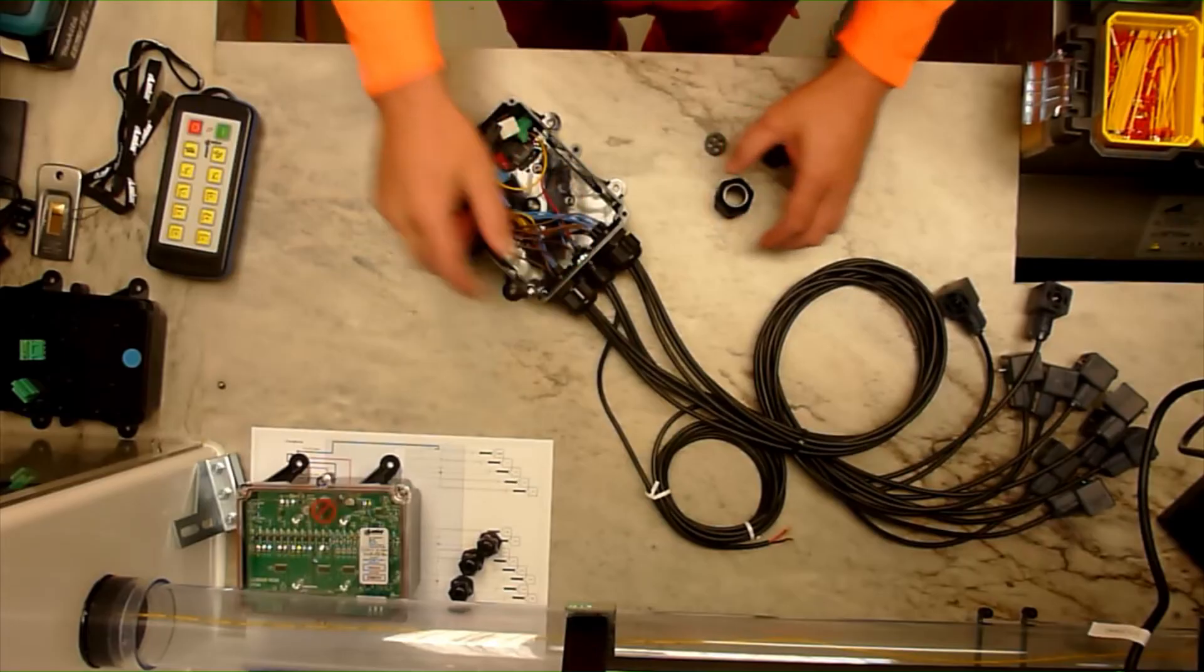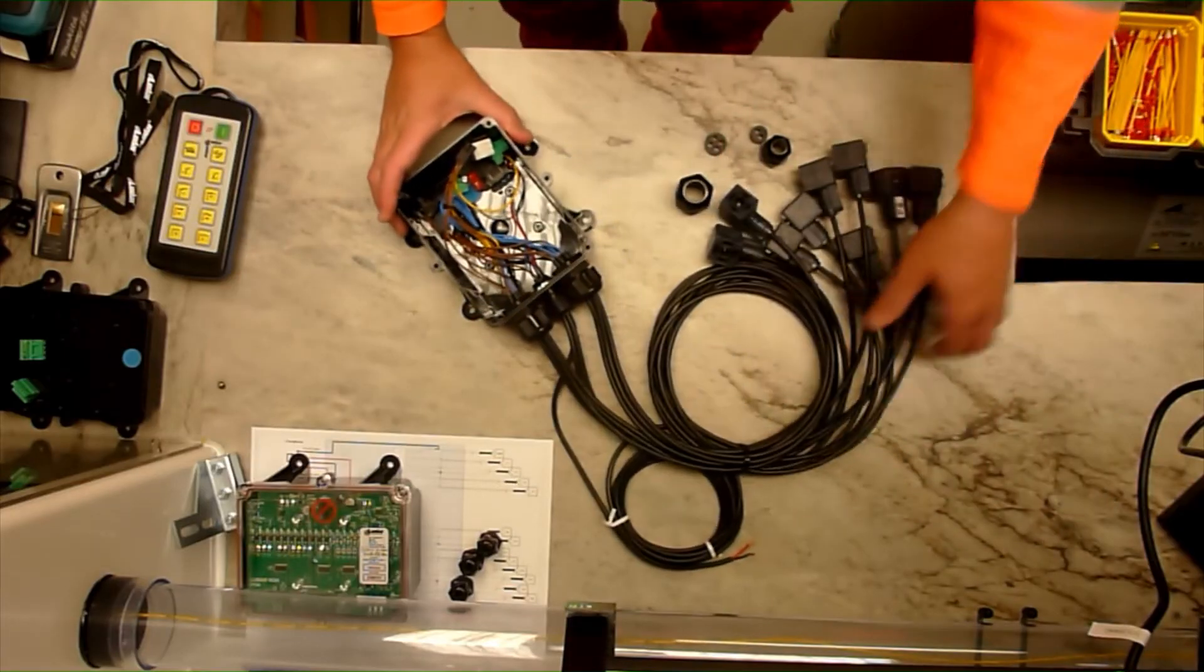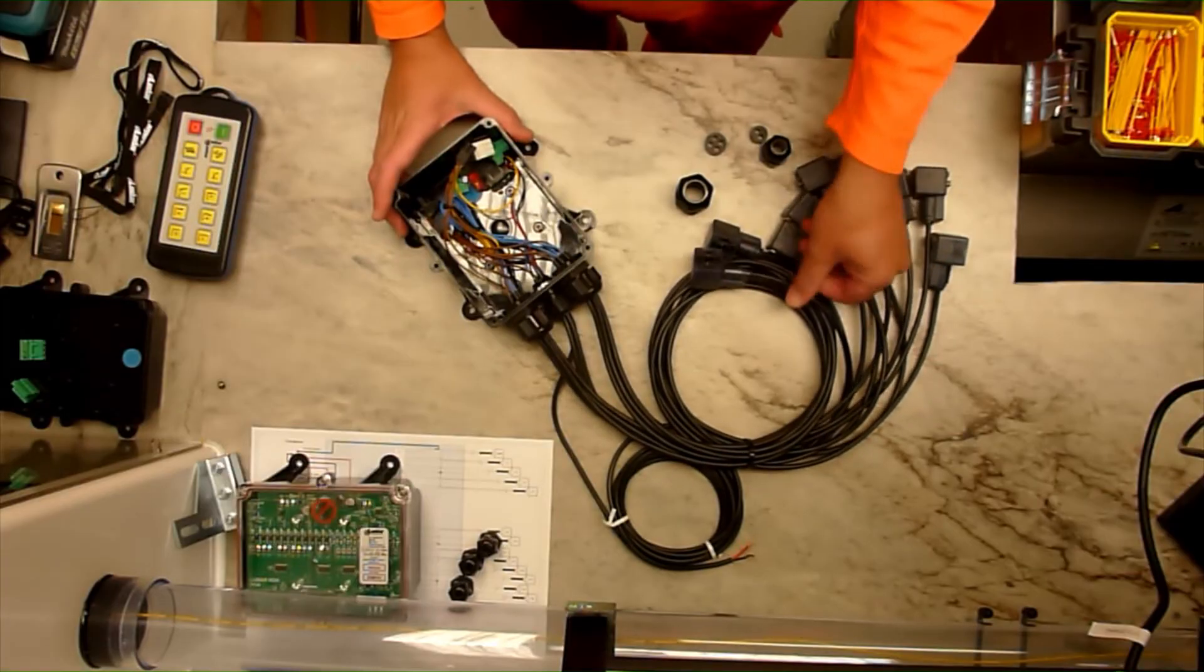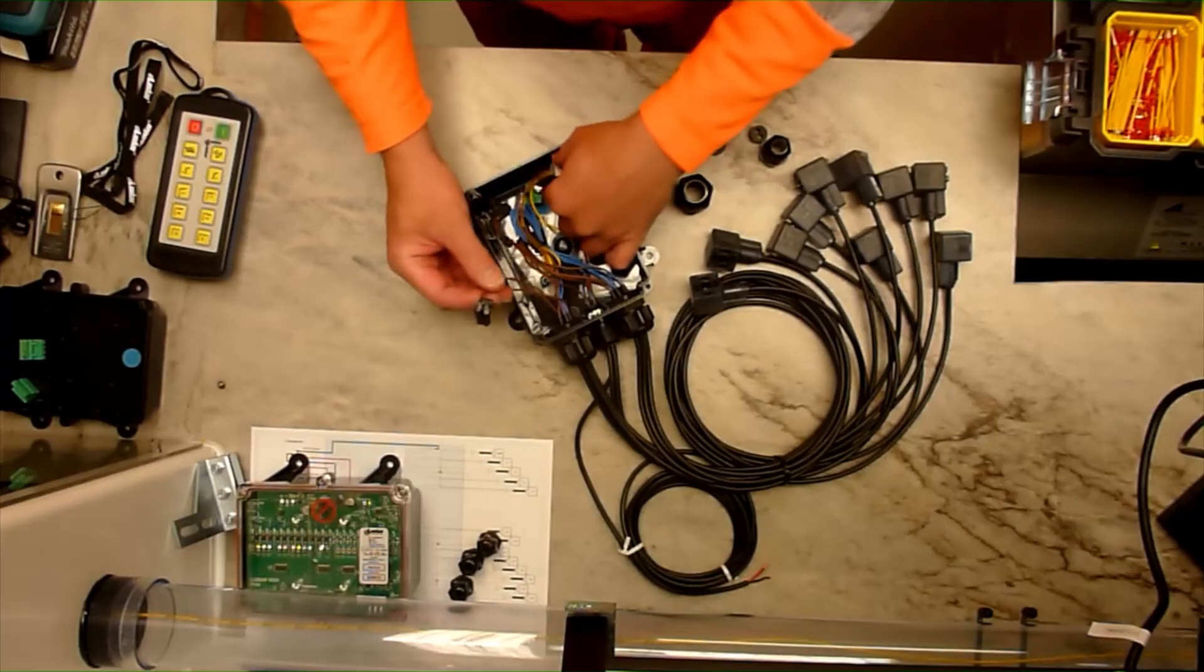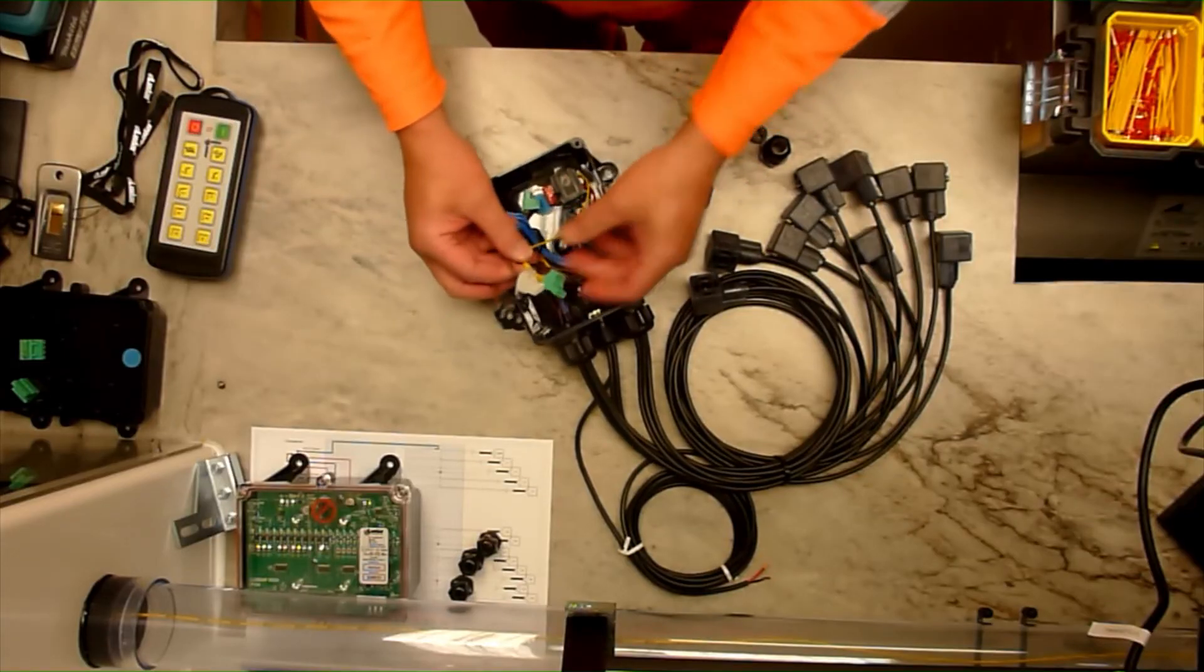I use cable glands with multiple hole grommets in. Here they are feeding the solenoid cables into the box and here you can see all the connectors that connect onto the Lodar receiver.